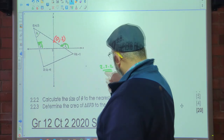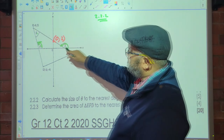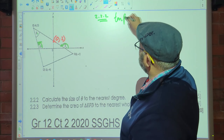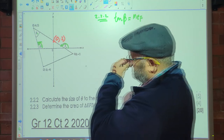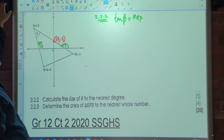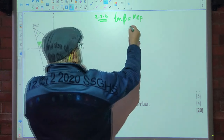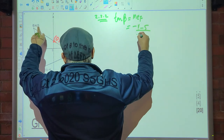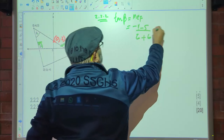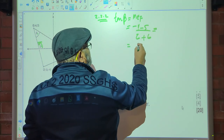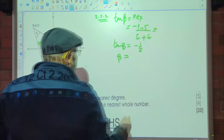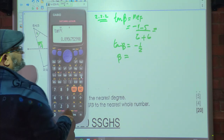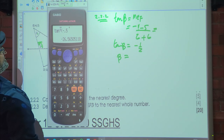Let's work out beta first. tan(β) = gradient of EF. Gradient = change in y / change in x = (−1 − 5) / (6 − (−6)) = −6/12 = −0.5. So beta = arctan(−0.5), giving a reference angle of 26.56°, and the obtuse angle is 153.43 degrees.